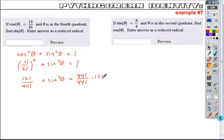So what I'm going to do is I'm going to replace these with 441, and 1 is 441 over itself. And so if I subtract 121 over 441 from both sides, I get sine squared theta is equal to, when I combine my terms, I get 441 minus 121 is 320 over 441.